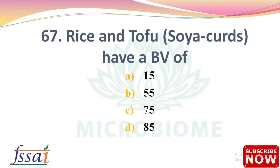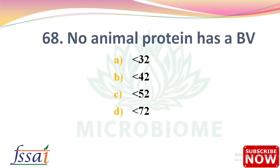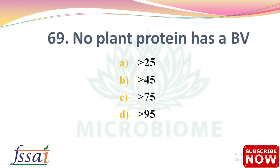Next: Rice and tofu (soya curds) have a biological value of — options: 15, 55, 75, 85. The right answer is option C, 75. Next: No animal protein has a biological value of — options: 25, more than 25, more than 45, more than 75, more than 95. The right answer is option C, more than 75.